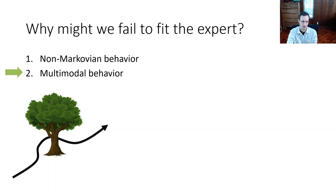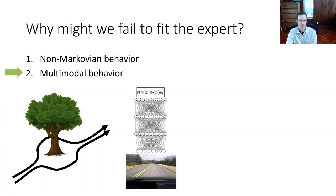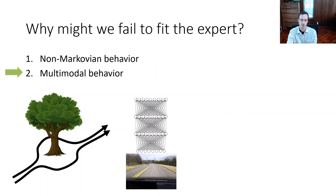Let's say you want to navigate around a tree — maybe you're flying a quadcopter. You can fly around the tree to the left or to the right; both are valid solutions. At the point when you're in front of the tree, some expert trajectories might involve going left and some might involve going right. So in general, in your training data, you'll see very different actions for very similar states. This is not a problem for discrete action spaces like left, right, and straight, because you can directly output probabilities for each discrete action. However, if you're outputting a continuous action — maybe the mean and variance of a Gaussian distribution — you have a problem because a Gaussian has only one mode. If you see examples of left and right and average them together, that's very, very bad.